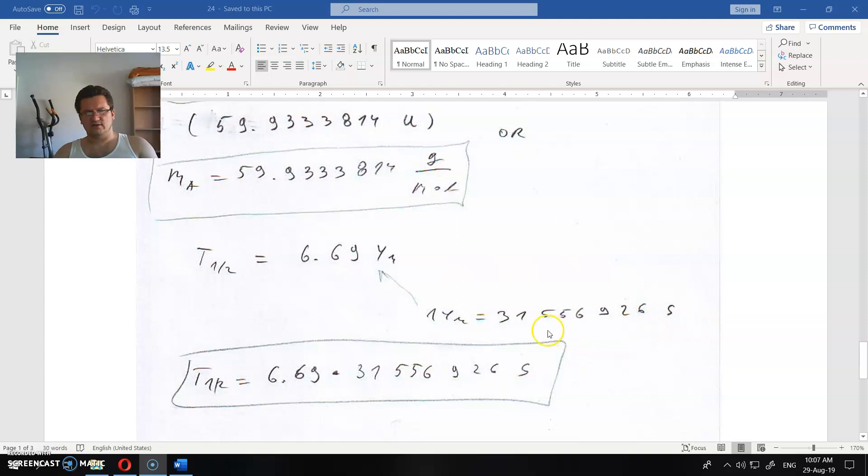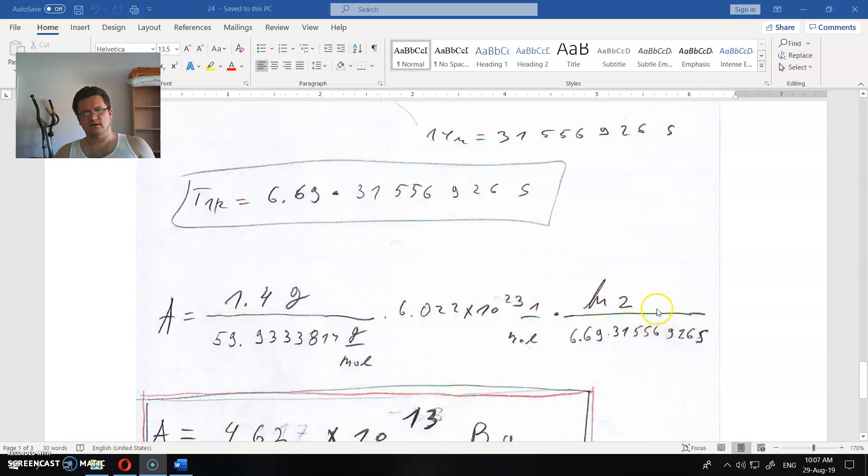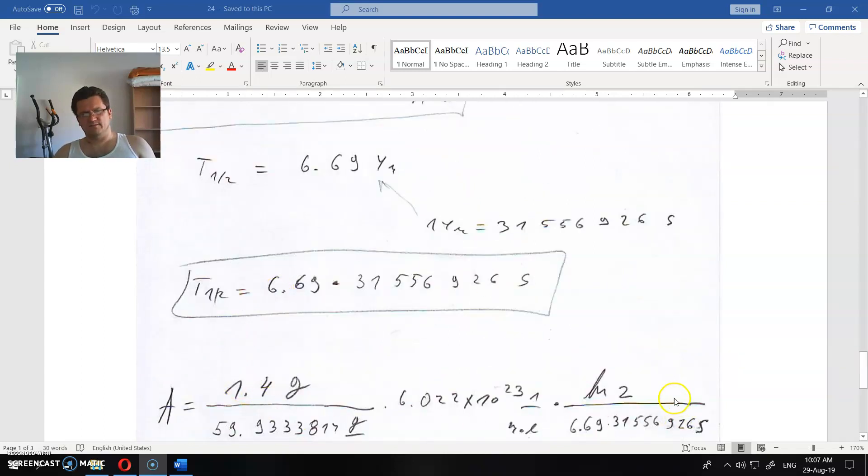One year holds inside itself this much seconds. So when you multiply that with this, you will get how much seconds. And this is the complete equation for the activity. You just rearrange and solve everything and you will get the final result in becquerels.